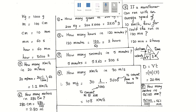Problem number four: how many kilometers per hour in 30 meters per second? For example, if a friend says he's driving at 30 meters per second, you don't know if that's fast or slow because you're more used to kilometers per hour. So we need to convert from meters per second to kilometers per hour.